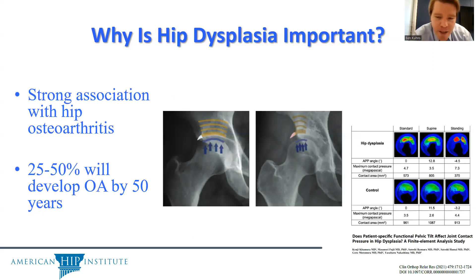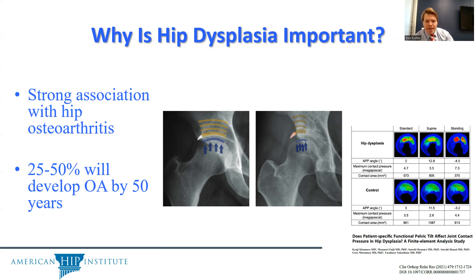Hip dysplasia is known to cause arthritis, and from a biomechanical standpoint, this can be explained by increased stress on the smaller area of acetabular cartilage exposed to the femoral head. The graphic on the left shows normal acetabular coverage and joint forces, compared to the dysplastic hip on the right, where a concentration of force results in abnormally high force on the cartilage — explaining why cartilage is often diseased earlier in life in the dysplastic population.